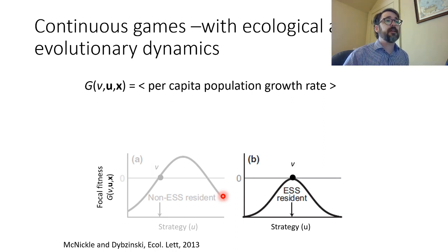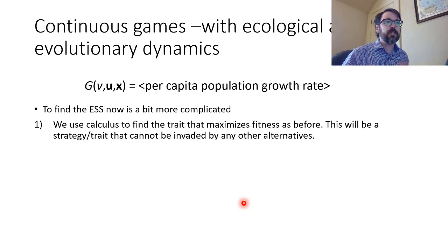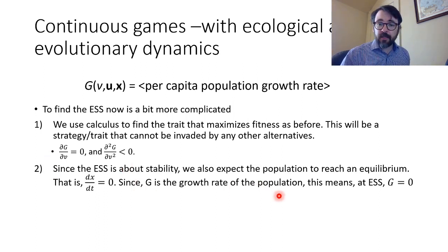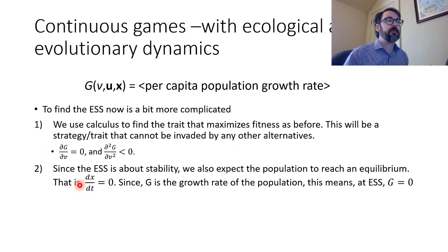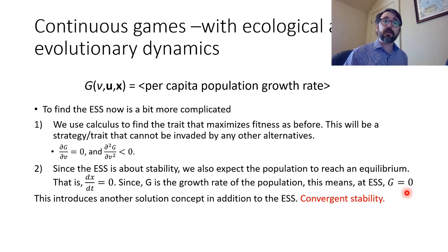If you take nothing away from this part of the lecture, it's that this fitness landscape or adaptive landscape is not a static place — it's constantly changing shape during the course of evolution. To find the ESS: we need the first derivative to be equal to zero, and we need the second derivative to be negative, which ensures we're at a maximum not a minimum. Since the ESS is about stability, we also expect the population should be at some kind of ecological equilibrium, meaning the change in population growth through time should be zero. Since G is that rate, we need G to be equal to zero at the ESS. This introduces another solution concept in addition to the ESS, which is known as convergent stability.